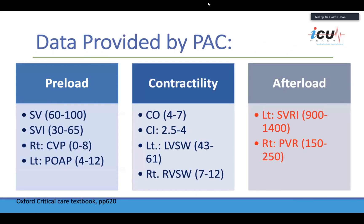The PA catheter will give you a plethora of data — indicators for preload, indicators for contractility, and indicators of afterload, for both the right side and the left side of the heart.